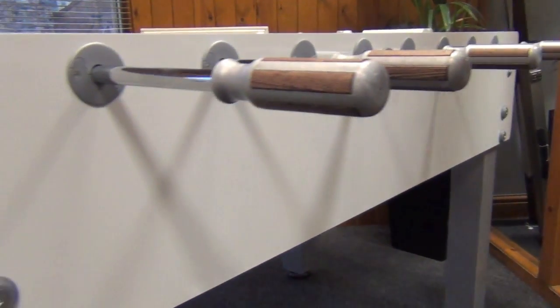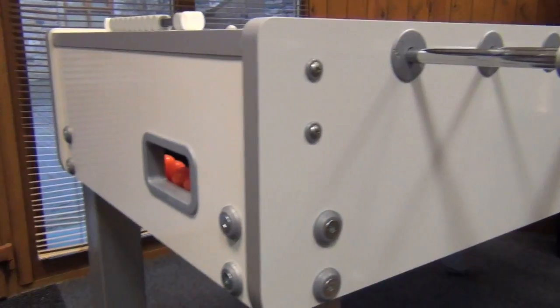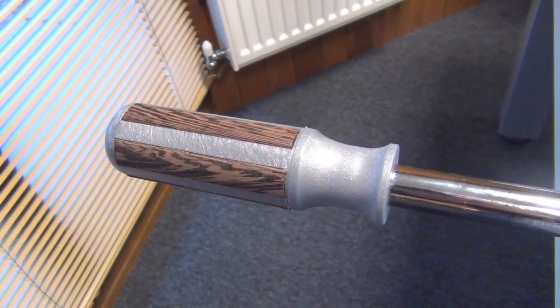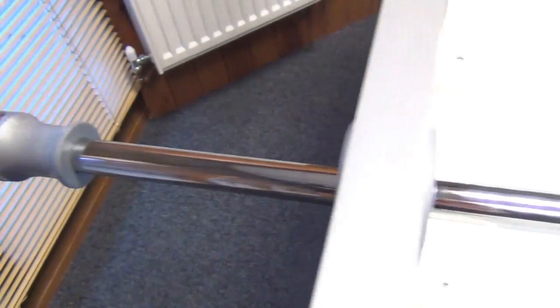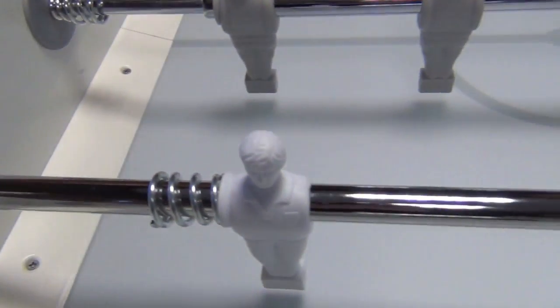The handles have wooden inserts to reduce perspiration and improve grip. The telescopic rods are made from 16mm thick high-resistant steel with anti-rust chrome plating.